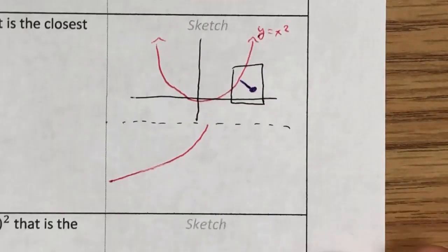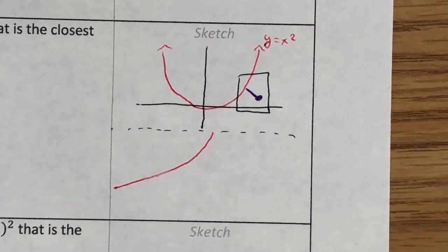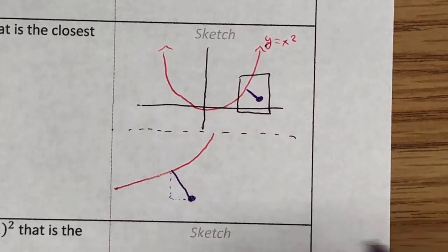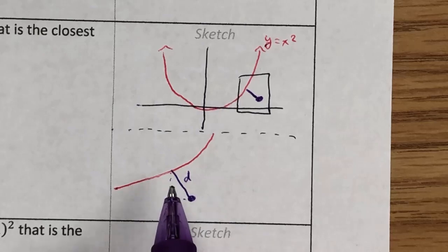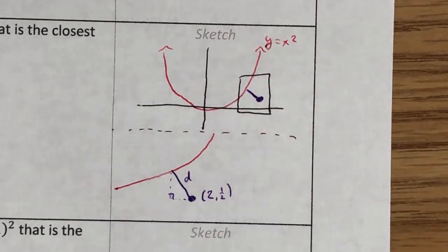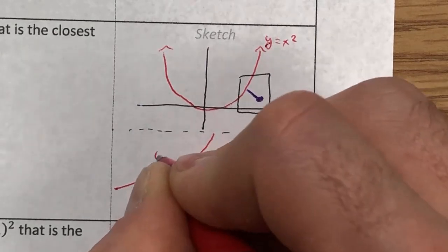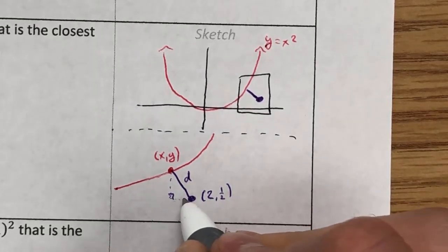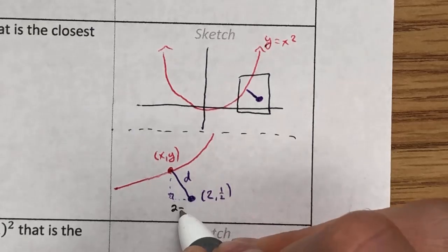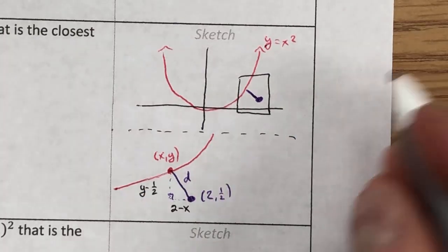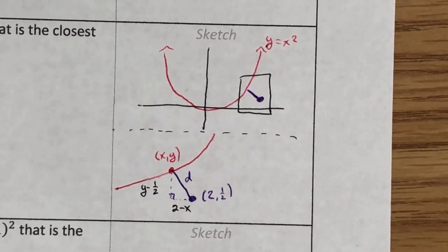Zooming in, I can find the minimum distance by creating a small right triangle. The horizontal leg is the difference in x-values: (2 − x). The vertical leg is the difference in y-values: (y − 1/2). I can use the Pythagorean theorem to set up a distance relationship.